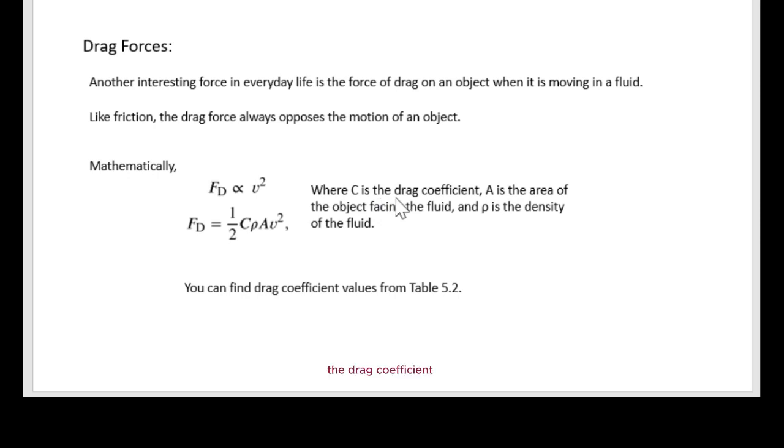Where C is the drag coefficient, A is the area of the object facing the fluid, and rho is the density of the fluid. You can find the drag coefficient values from Table 5.2.